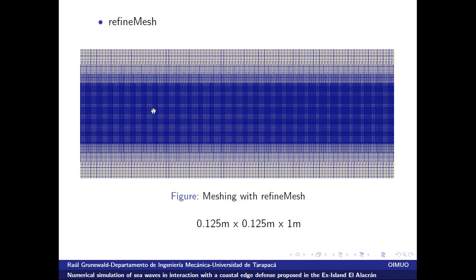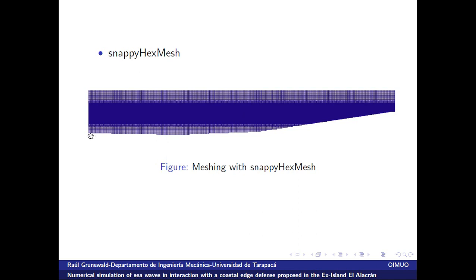Three refinement levels were applied. The smallest element has dimensions of 0.125 meter length and width, and one meter depth. The refinement was done only in the horizontal and vertical dimensions. Then, to introduce the bathymetric profile, the SnappyHexMesh tool was used, and we obtained the domain to be used in the simulations.